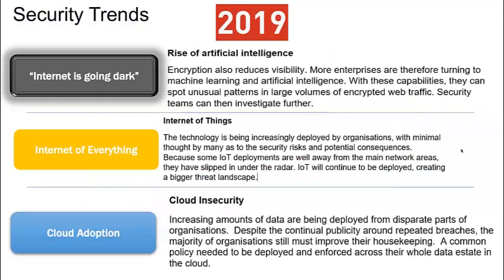The first trend is the rise of encrypted internet and enterprise traffic — the internet going dark. More and more traffic is encrypted. Web traffic that was encrypted was around 50% in 2017; through 2018 we've hit nearly 75%, and Gartner is already saying around 80% of enterprise traffic will be encrypted heading into 2019.